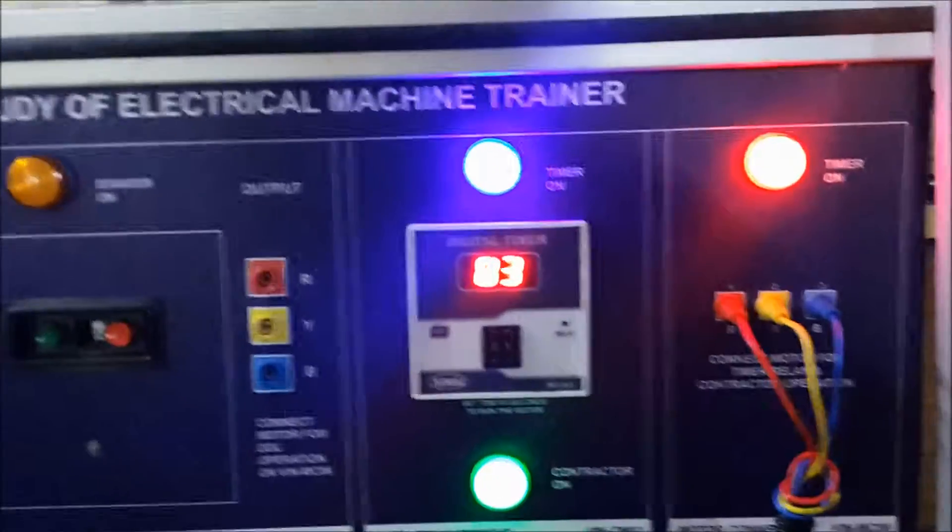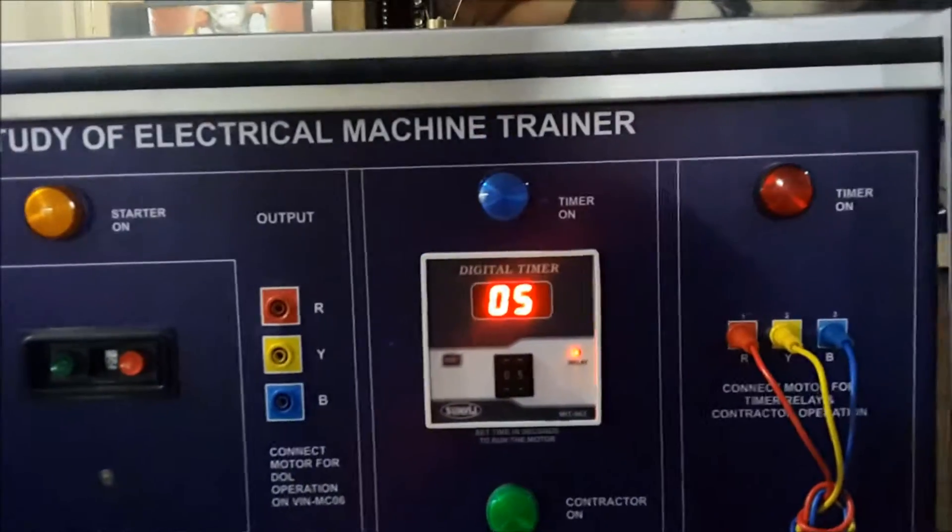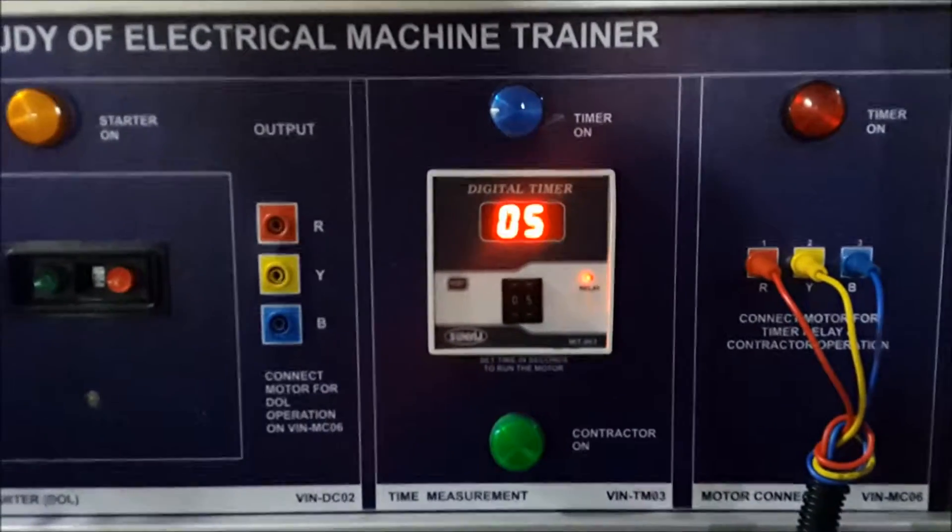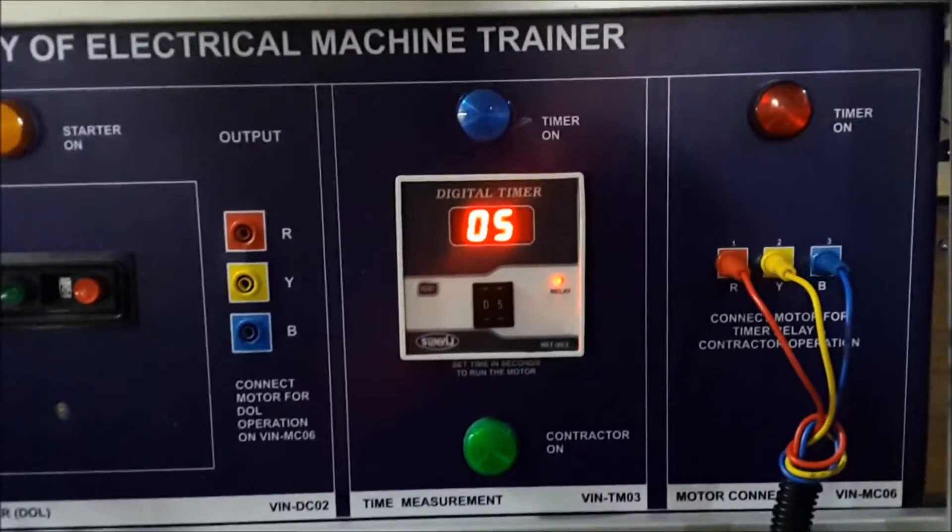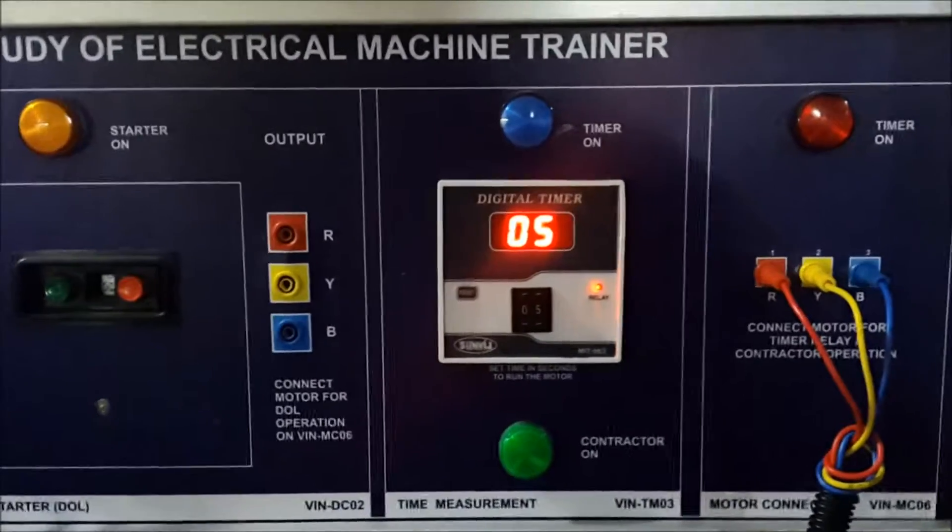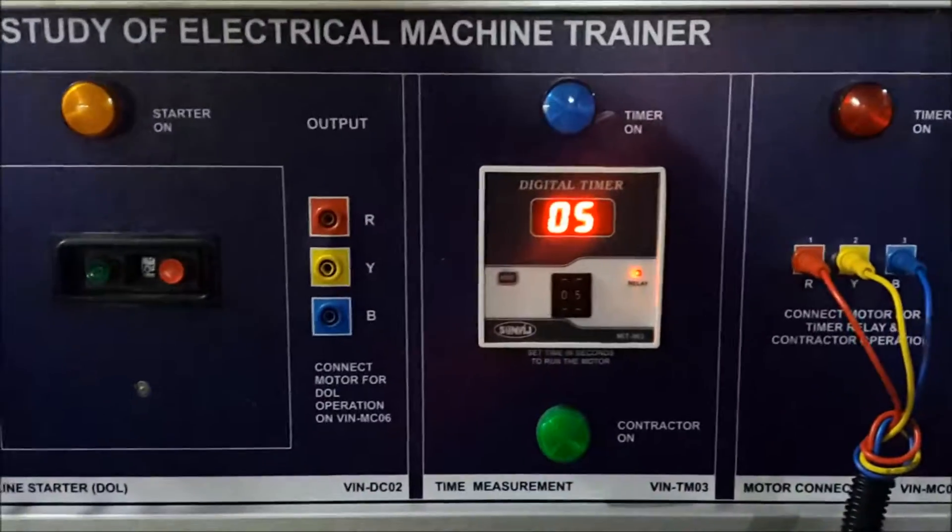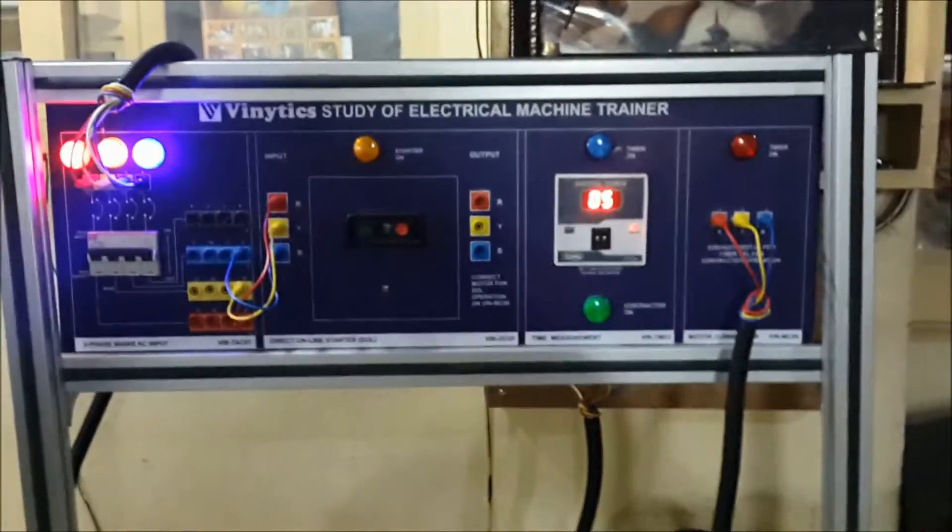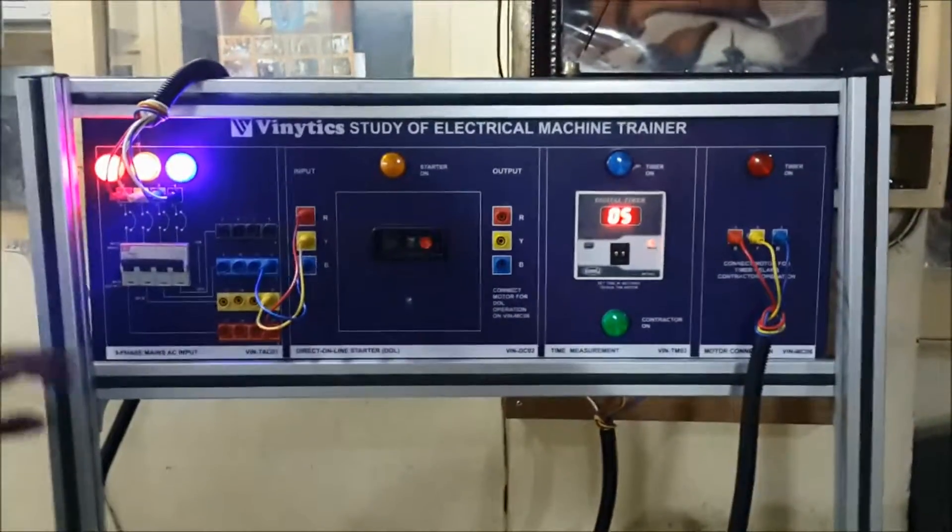As you can see, when the contactor LED is on, the timer is on and the motor is on. The contactor is the main component which makes the contact for the three-phase supply and runs the motor. The timer LED switches off automatically when the set time is reached. This is the complete video.